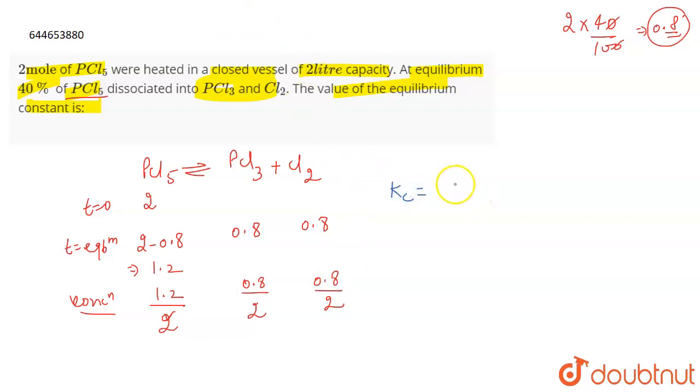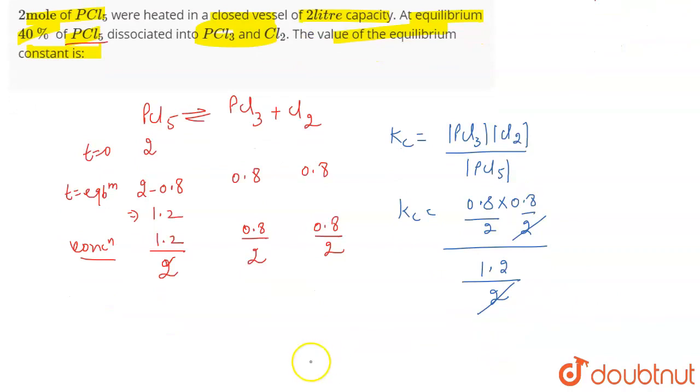equilibrium constant Kc, which is the concentration of PCl3 times concentration of Cl2 divided by the concentration of PCl5. So Kc equals 0.8 by 2 times 0.8 by 2 divided by 1.2 by 2. The 2 cancels out. We get the value of Kc equal to 0.267.